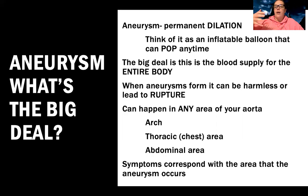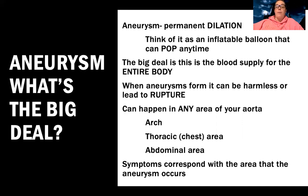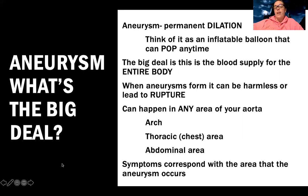Aneurysms can be harmless, but they can also lead to rupture. They can happen anywhere along the aorta — the aortic arch, the thoracic area, or the abdominal aorta, which is where you get the triple-A, abdominal aortic aneurysm. Symptoms correspond to the location: a thoracic aneurysm may cause chest pain, while an abdominal aneurysm may cause abdominal or back pain.